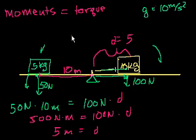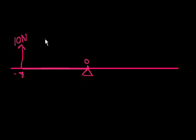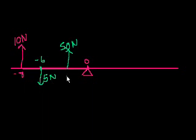So let's do a more difficult problem — the more problems we do, the more sense everything will make. Let's use forces directly. Here's the pivot. I have a force of 10 newtons going in the clockwise direction at position minus 8, so its distance from the pivot is 8. I have another force going down at 5 newtons at position minus 6. And I have another force going up at 50 newtons at position minus 2, so its moment arm distance is 2.